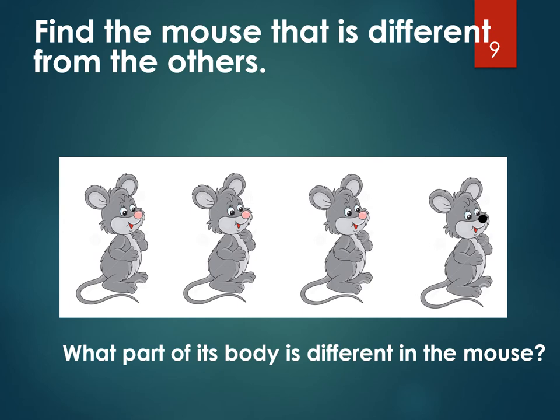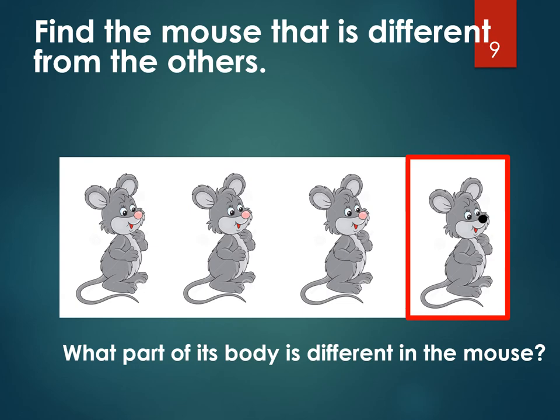Here are those mice again. Do you see a mouse that's different here? Look very carefully — there's something very, very small that's different. But I'm sure you can spot it. Did you point to this one? And what's different? That mouse has a black nose. Everybody else has a pink nose, but this mouse's nose is black. Let's go to the next question.